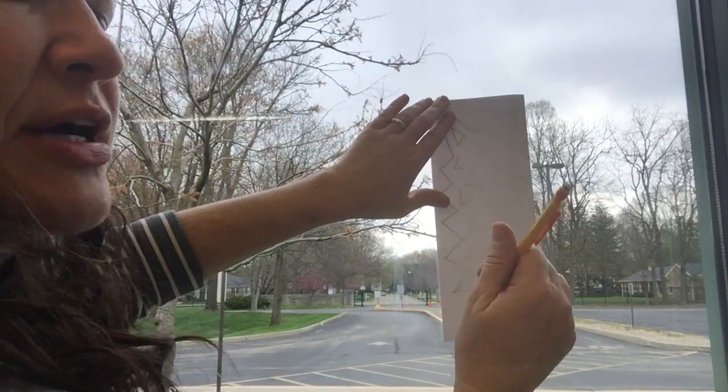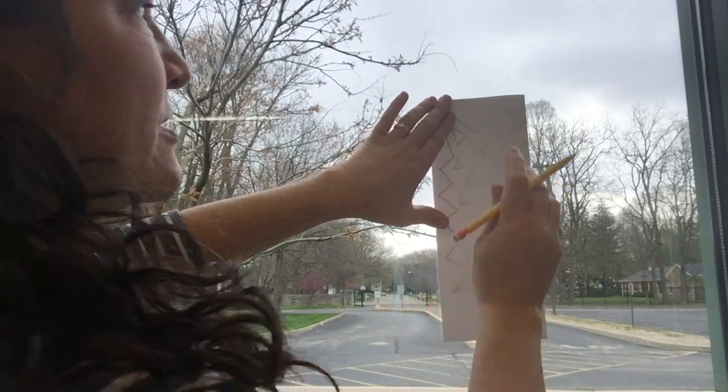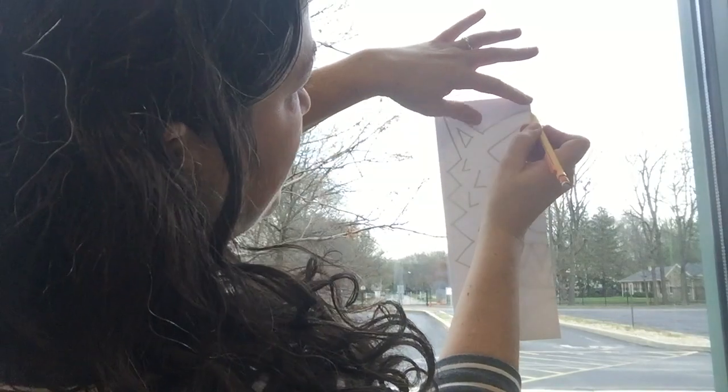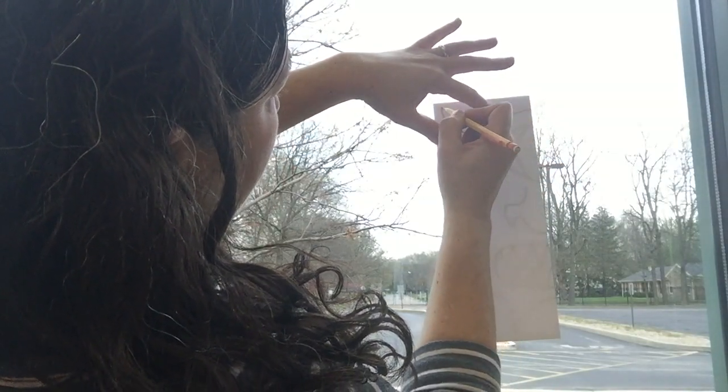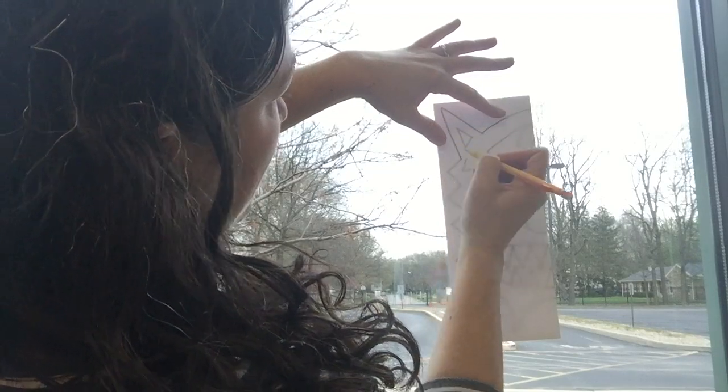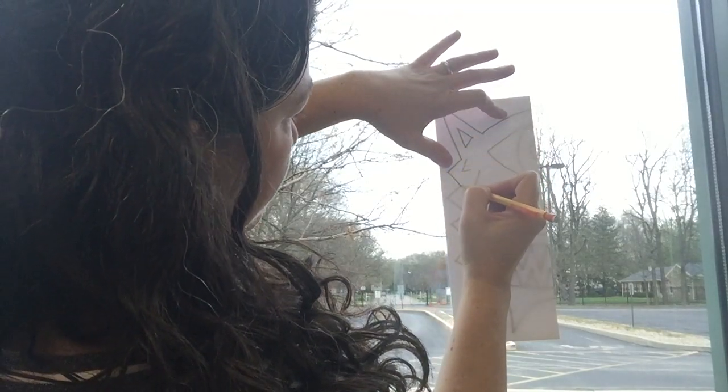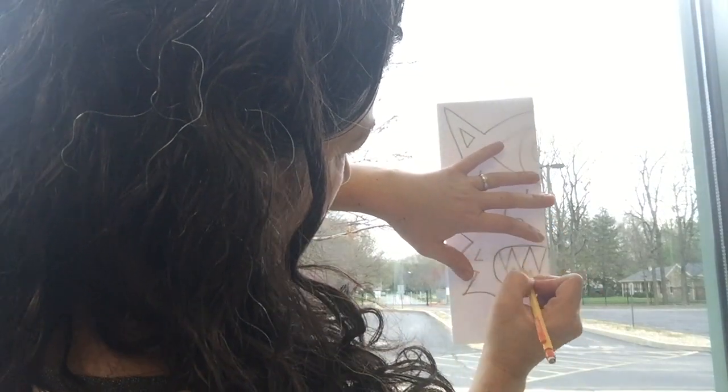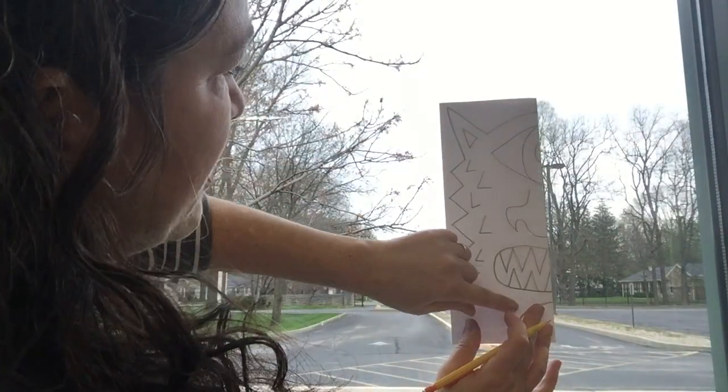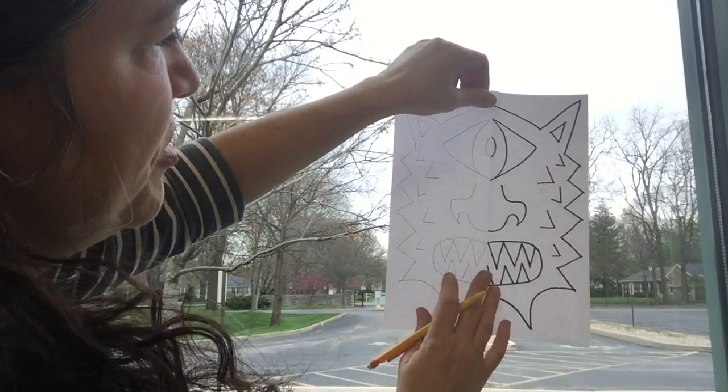I'm tracing with my pencil. I don't want to trace with sharpie on the window because then I can get sharpie on the glass. I'm pressing the paper down with my fingers as I trace. That helps me to trace exactly on the lines. I've checked to make sure I didn't miss any lines.